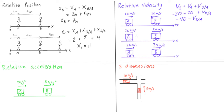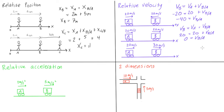Now say both are going to the right at 20 m/s. If you're sitting in A and traveling at the same speed, it shouldn't look like B is moving at all with respect to you. Using the formula: VB = VA + V(B/A), we get 20 = 20 + V(B/A), so subtracting gives 0 equals the velocity of B with respect to A. That makes sense — if you're both at the same speed, the distance between you isn't changing.